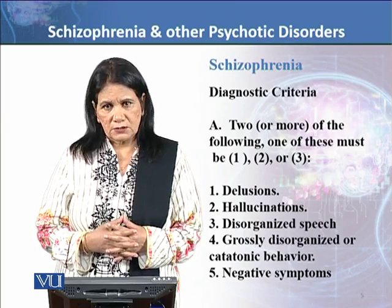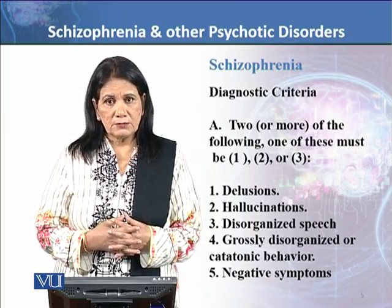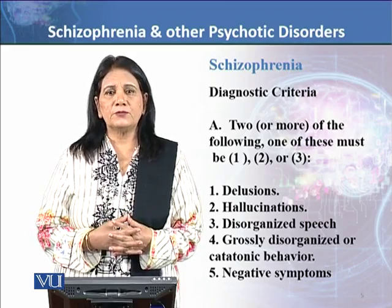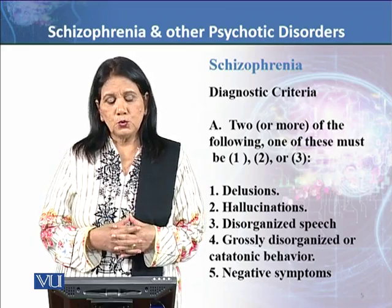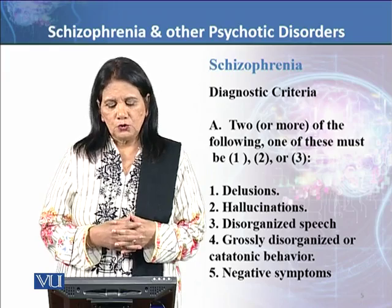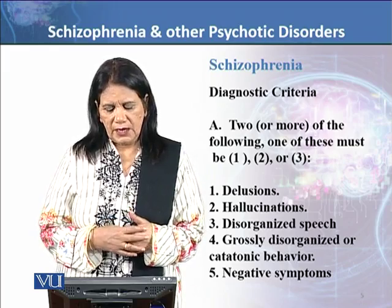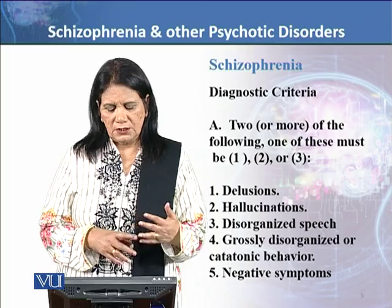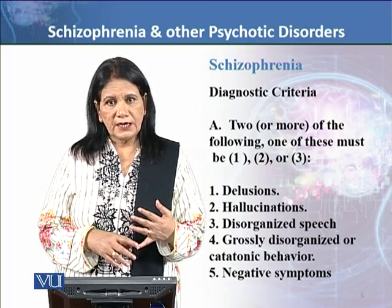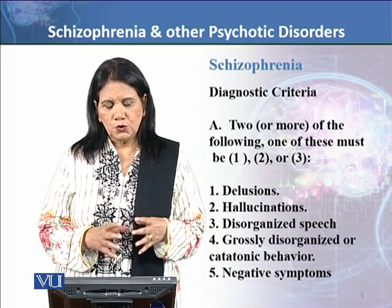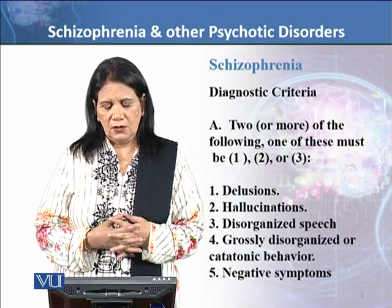Now let's talk about the diagnostic criteria according to DSM-5. In criterion A, two or more of the following symptoms must be present, and at least one must come from the first three: delusions, hallucinations, disorganized speech, grossly disorganized or catatonic behavior, and negative symptoms. At least one of the first three must be present to fulfill the criteria for schizophrenia.